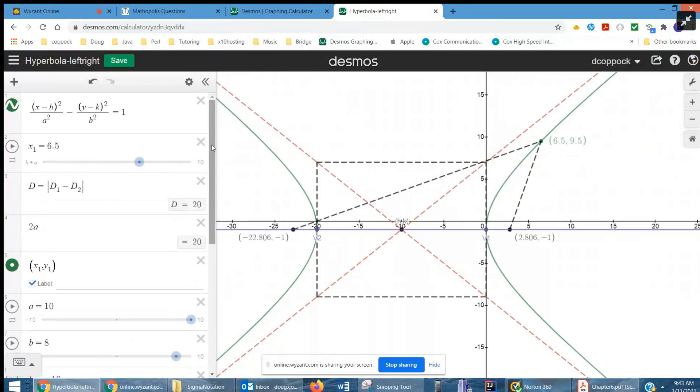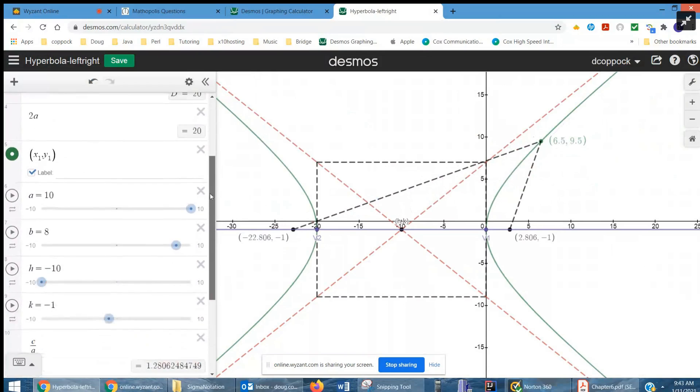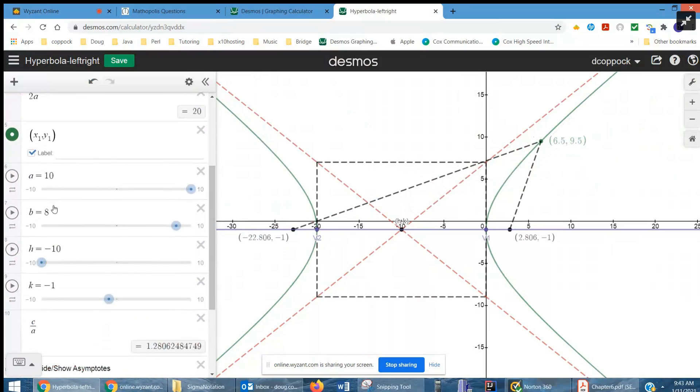Okay, and notice that I've got the general form for the hyperbola up here. a is 10, d is 8, there's the center at negative 10, negative 1.